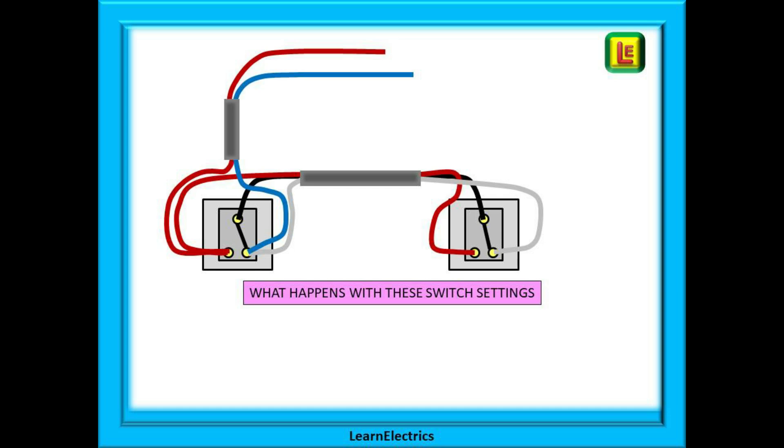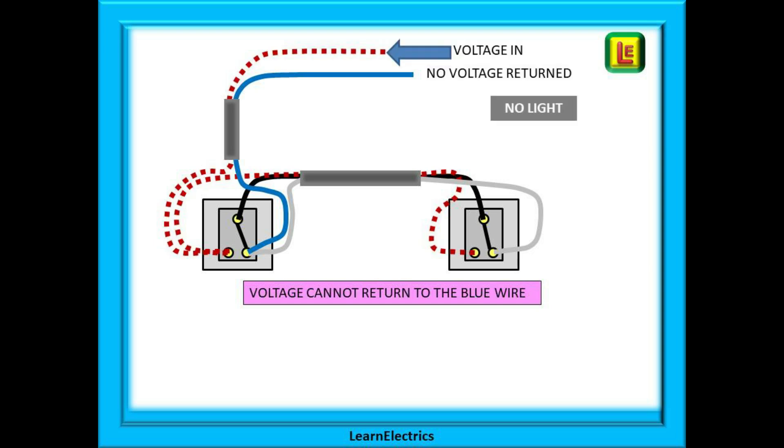What happens with these switch settings now? We have just put switch number 2 into the opposite state. Voltage will travel along the brown switch wire again to switch 1, L1, along the brown strapper wire to switch 2, L1, and there it stops. The voltage cannot reach the black strapper wire. No voltage is returned so the light goes out.